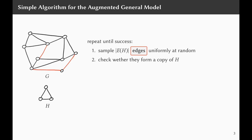Of course, they do not form a triangle, so the algorithm just repeats sampling. Maybe it's lucky this time and it actually finds a triangle — and when it is lucky, it returns a triangle.